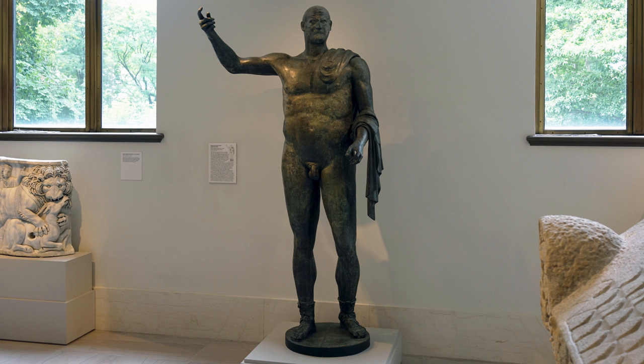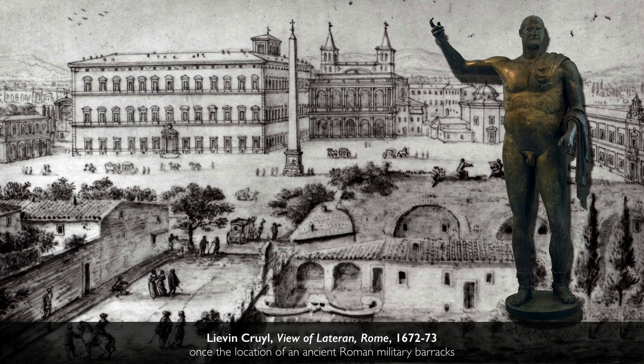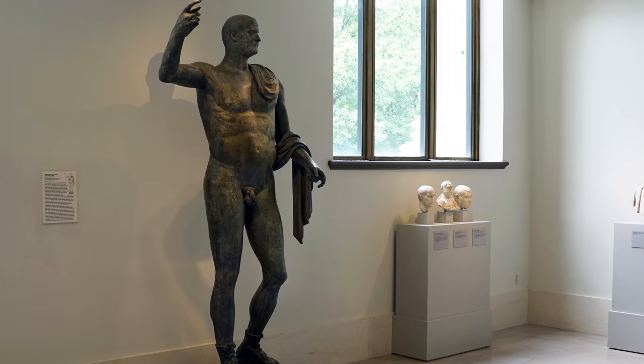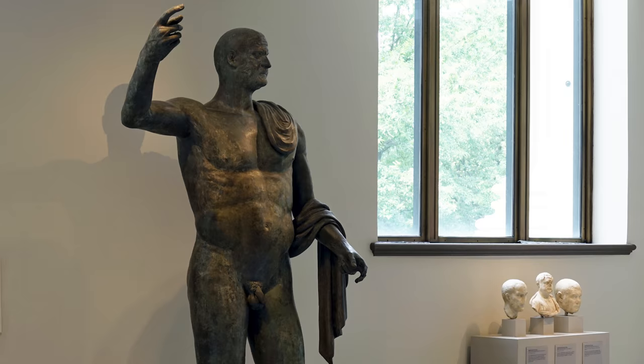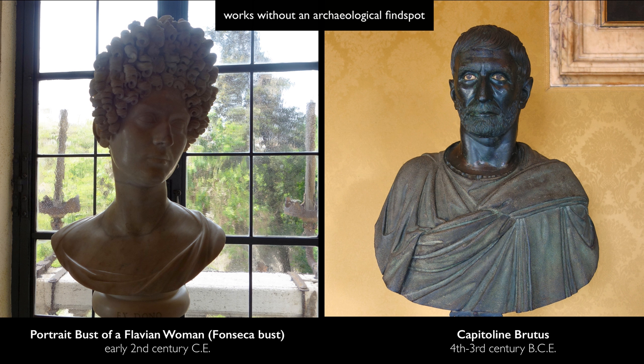The problem with a statue like this, where we just don't know where it came from and have no external evidence, is that we can't break out of that interpretive circle. The alleged findspot near St. John Lateran in Rome is significant because that was the location of a military barracks — the standard interpretation being that it was set up for a military audience that wouldn't have cared about its lack of classical qualities. But unfortunately, that findspot has no secure foundation. It's just a rumor, and it's been extremely convenient for scholars.